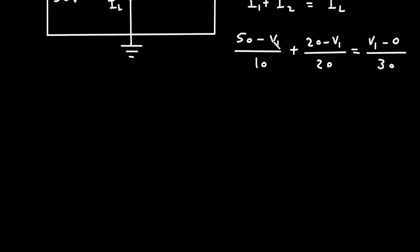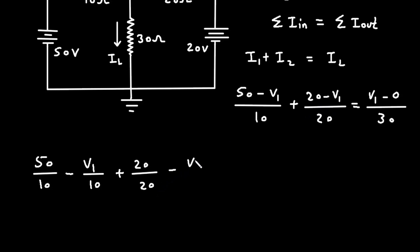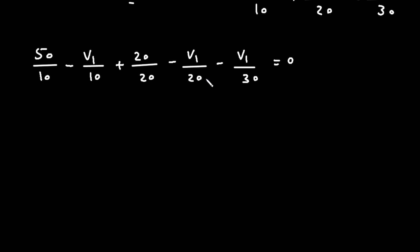Now let's simplify this and find the value of V1 by the conventional method. So: 50/10 minus V1/10 plus 20/20 minus V1/20, then taking IL to the left side gives minus V1/30, equals 0. Taking V1 common: V1 times (minus 1/10 minus 1/20 minus 1/30), plus 50/10 plus 20/20 equals 0.